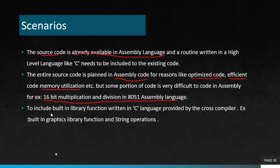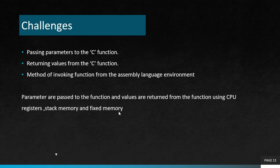Another situation is inbuilt libraries. We already know there are many inbuilt libraries in C language like math.h, string.h, and graphics libraries. For utilizing the advantages of these inbuilt libraries, we include the high level language code in the assembly code. These are some of the scenarios in which we can use this method. The challenges are the same as the previous method: passing parameters to the C function — earlier it was from C to assembly, here it is from assembly to C function — and returning the value from the C function. The method of invoking the function also depends on the cross-compiler.